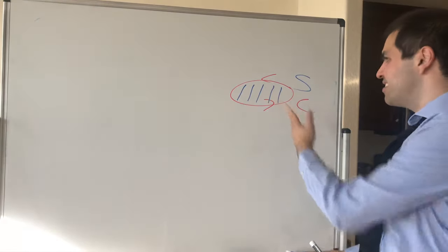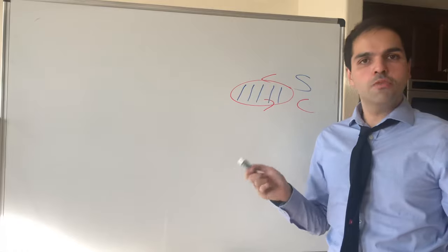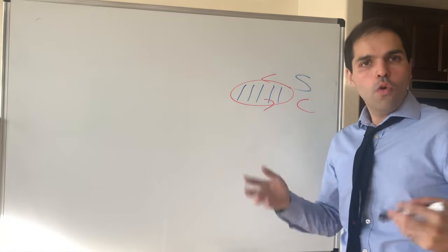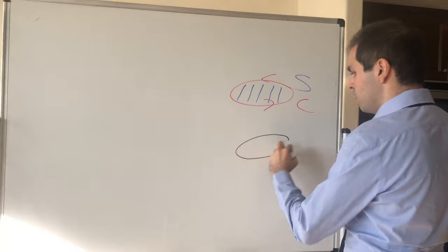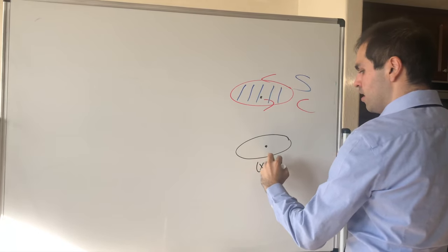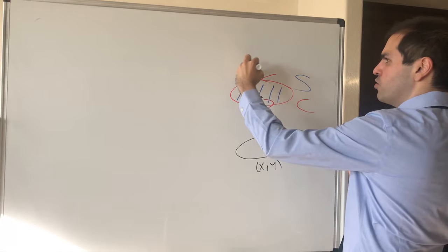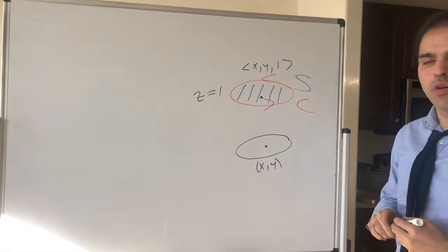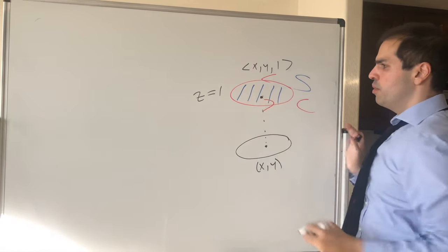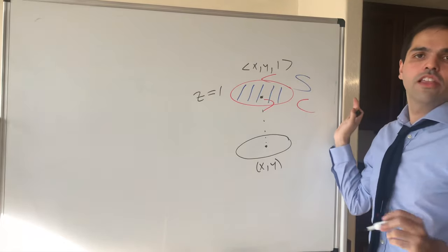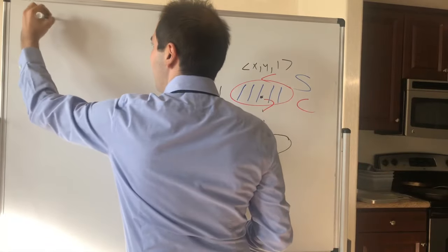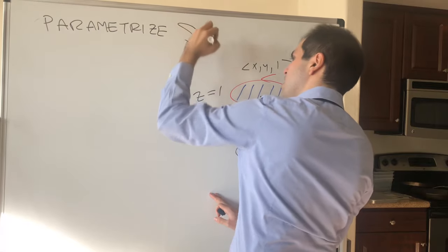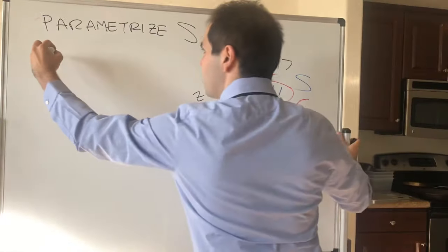Now that we've chosen the inside of the circle, how do we parametrize it? You can use polar coordinates or even lazier — just use x, y. Since everything is in the plane z = 1, we parametrize S as r(x, y) = (x, y, 1). The domain D is just the disk of radius 2, i.e., the shadow under the curve.